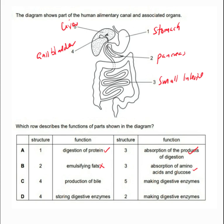Option C mentions production of bile — organ 4, yes, the liver does produce bile, but organ 5 does not make digestive enzymes. Option D says organ 4 stores digestive enzymes and organ 2 makes digestive enzymes — the pancreas can do that. But overall, only option A is the correct answer here.